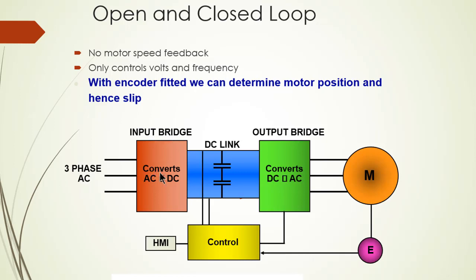To summarize: the three-phase AC voltage input bridge converts AC to DC. The DC link is used for filtering to get pure DC. The output bridge converts DC to AC, because our motor is a three-phase motor and we need AC voltage. The motor has controlling via encoders which provide feedback. The HMI — human machine interface — allows us to put in some instructions for controlling the motors.